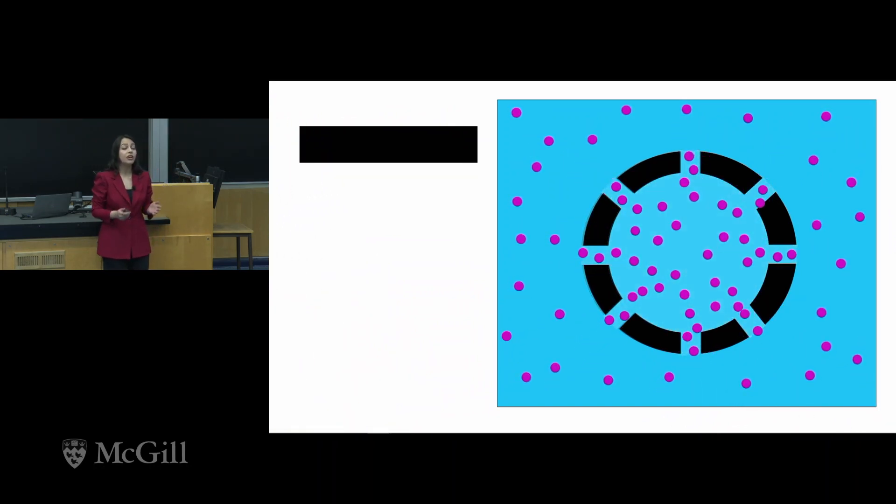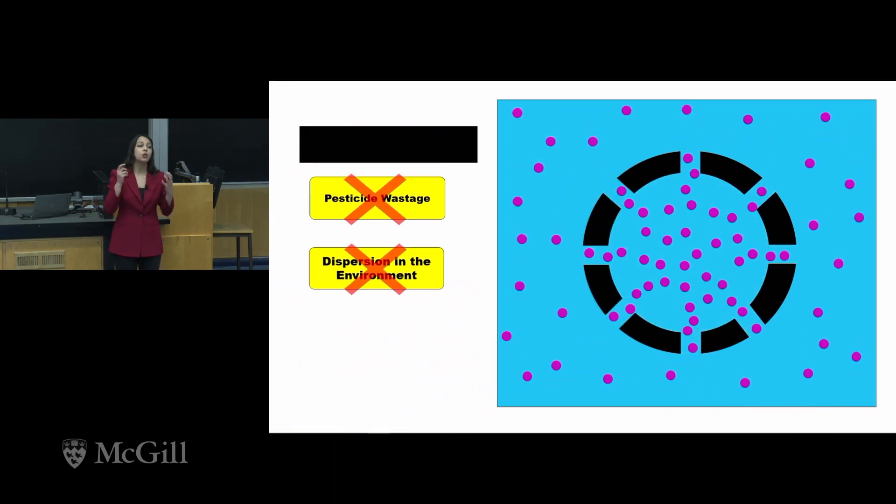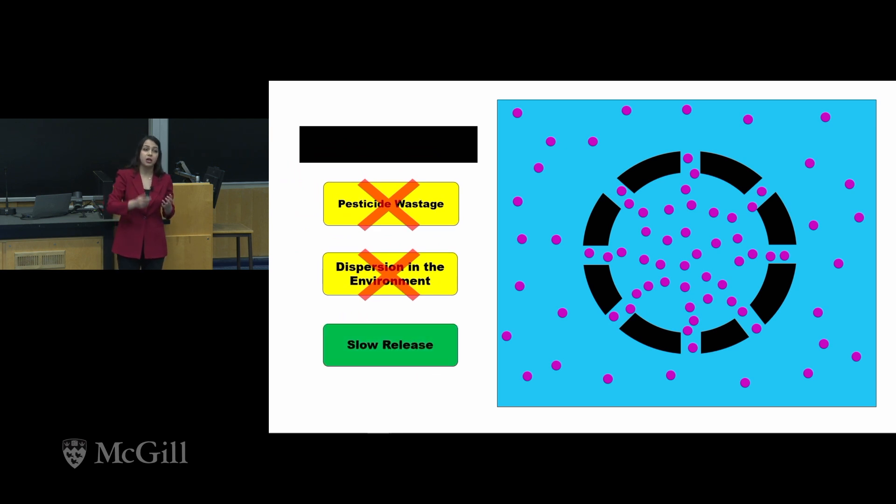Actually, it's an innovative method which involves loading pesticide inside some nanocarriers before applying them to plants. Encapsulating pesticide actually prevents the immediate dispersion of pesticide right after their application.